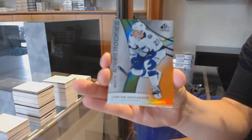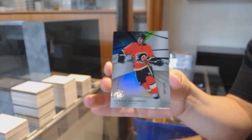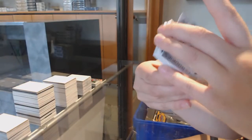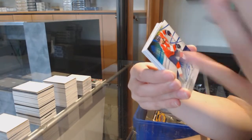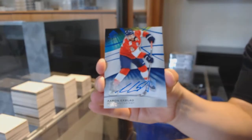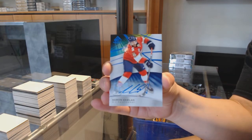We've got number 213 orange for Tampa, Carter Verhaeghe. 275 rainbow for the Flames, Johnny Gaudreau. Number to 299 rainbow rookie for Vancouver, Quinn Hughes. Blue base auto for Florida, Aaron Ekblad.